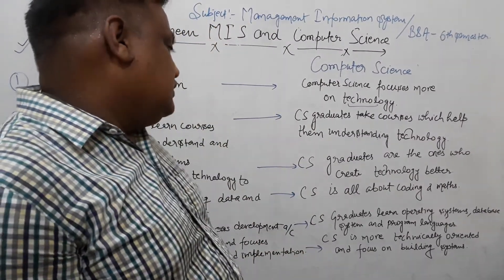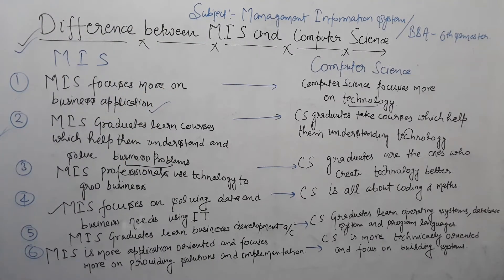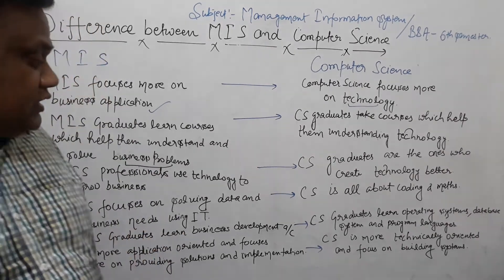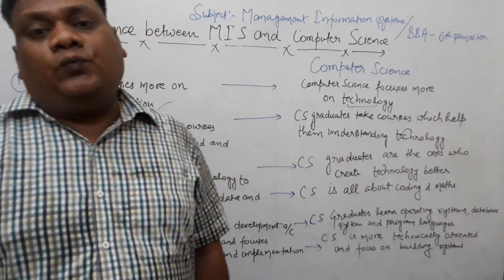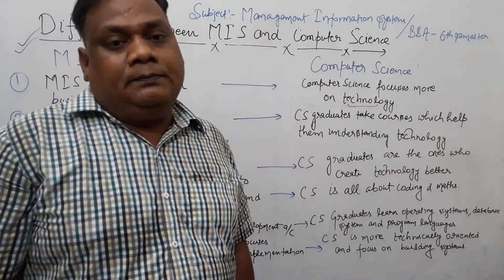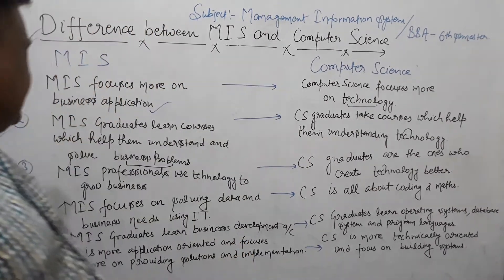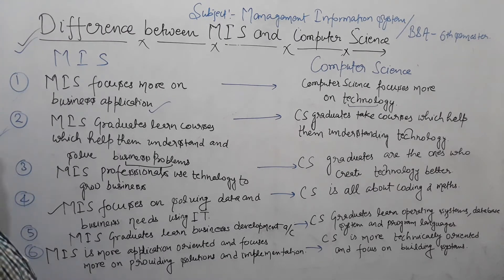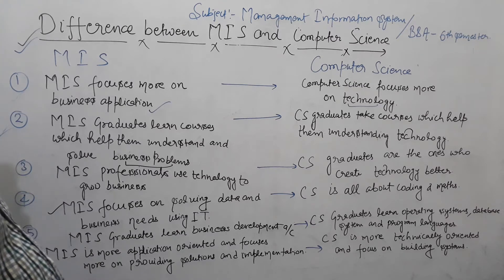The difference is that MIS covers business technology and accounting. MIS is about business development and accounts — the accounts field has a very big scope after BBA, MBA, and BCom. You can work as a chartered business analyst. MIS graduates go into business development and accounting.